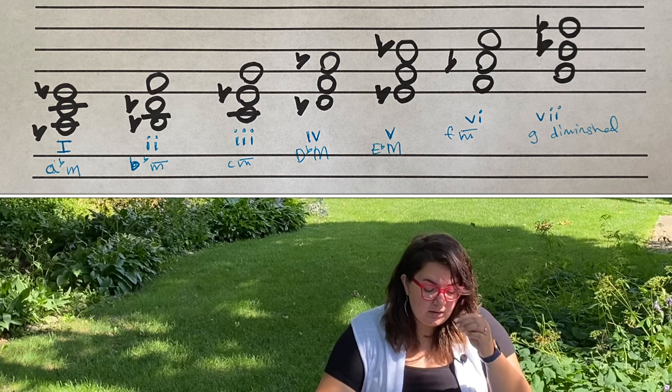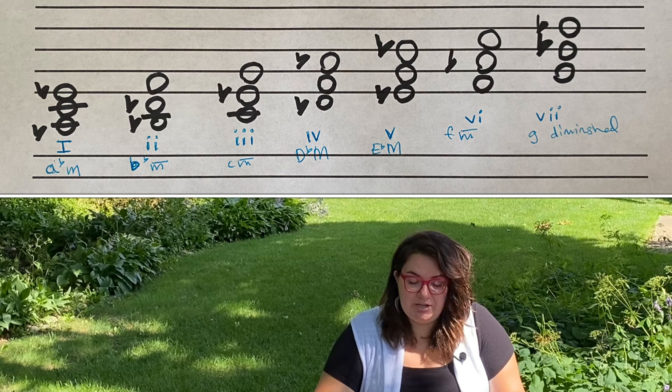The sixth chord is F minor — F, A-flat, C. The seventh chord is G diminished — G, B-flat, D-flat. Go ahead and try the A-flat scale for one or two octaves.